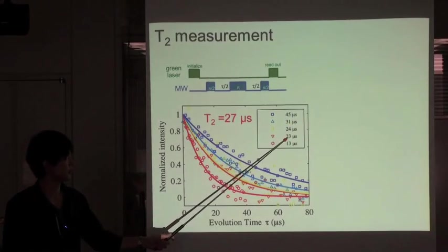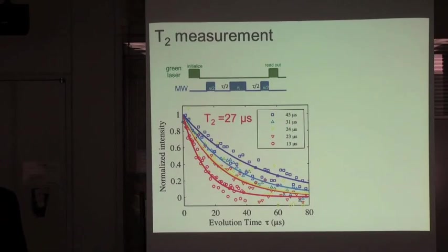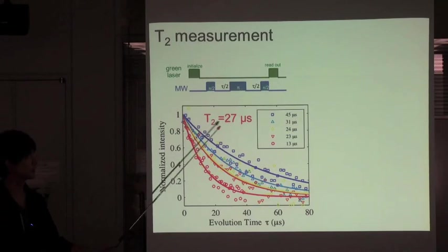These T2 values are 45, 31, 24, 23, 13 microseconds. The average value of T2 was 27 microseconds.